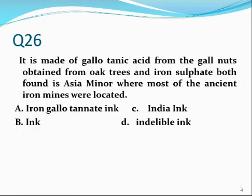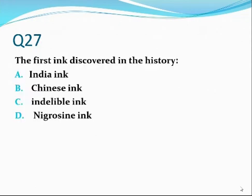Number twenty-six. It is made of galotannic acid from the gall nuts obtained from oak trees and iron sulfate found in Asia Minor where most of the ancient iron mines were located. The answer is alpha: iron gall ink.